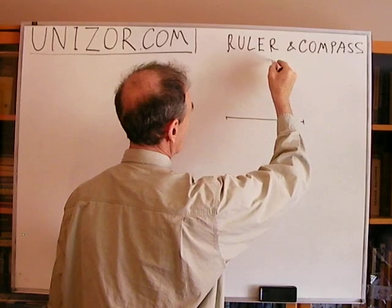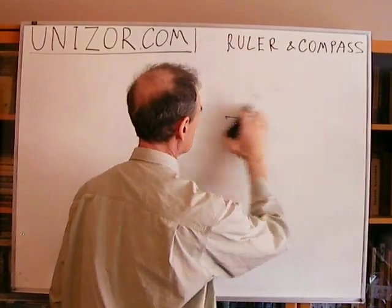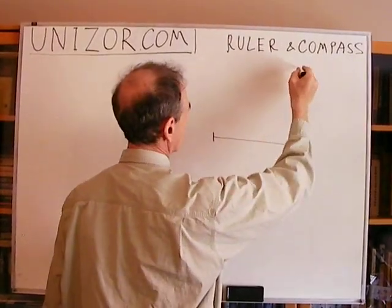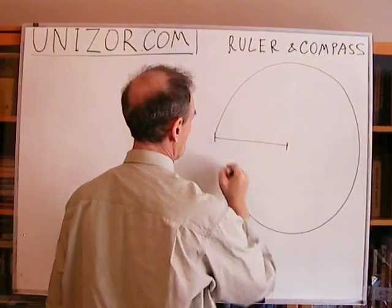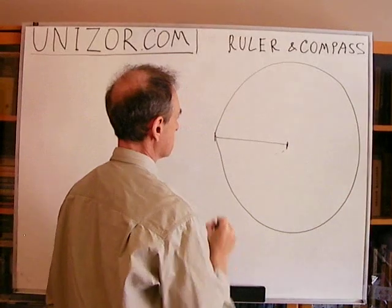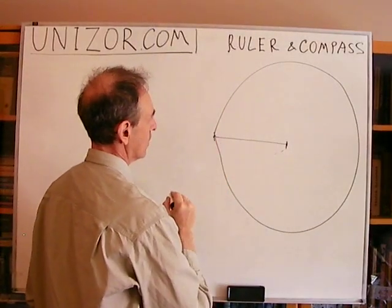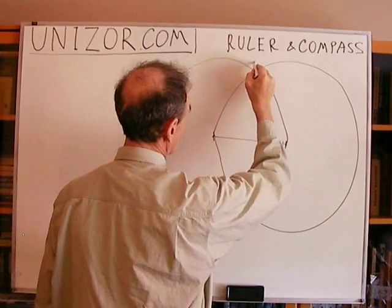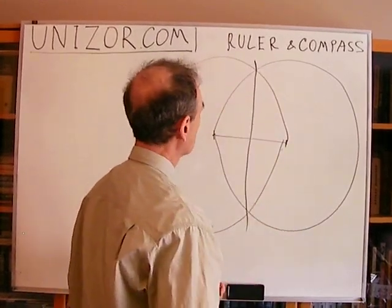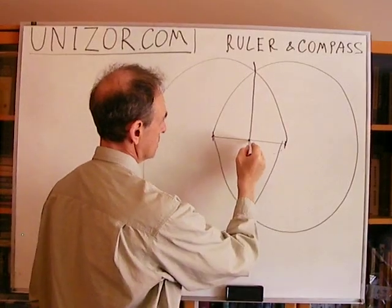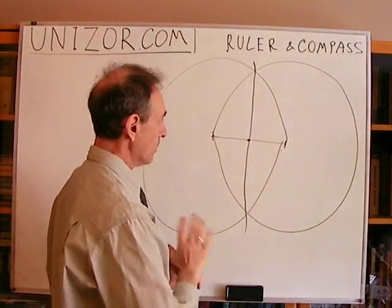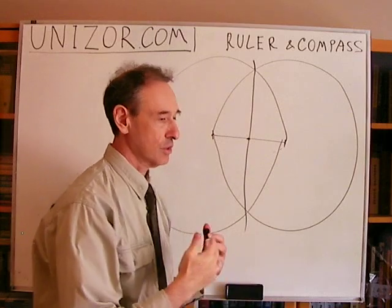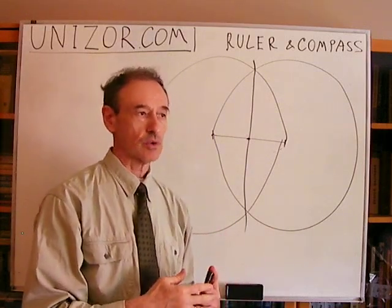Let's say the whole segment is a radius, and you draw a circle. You use this radius to have one circle using one endpoint as a center, and then using the other point as a center with exactly the same radius, you draw another circle. Now, if you connect with the ruler these two crossing points, the crossing point will be in the middle of this segment. I'm not going to prove it now — that will be in some other lecture — but I just wanted to show that we can do something with these two tools.